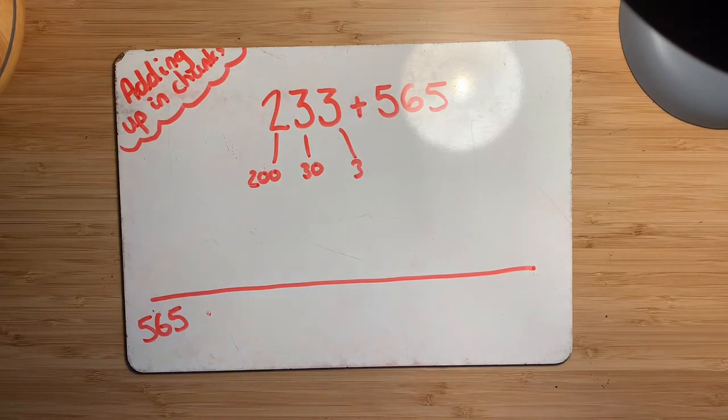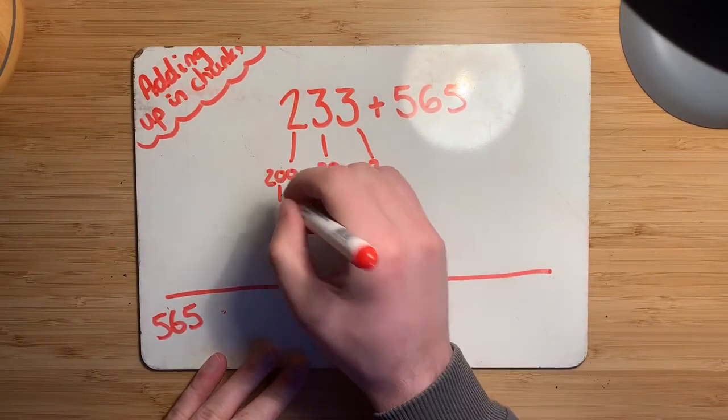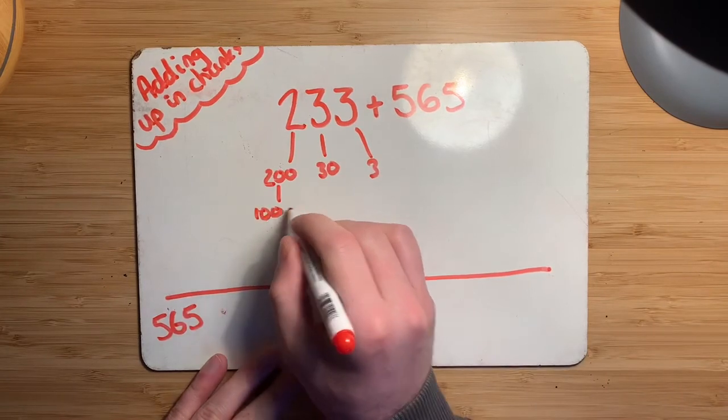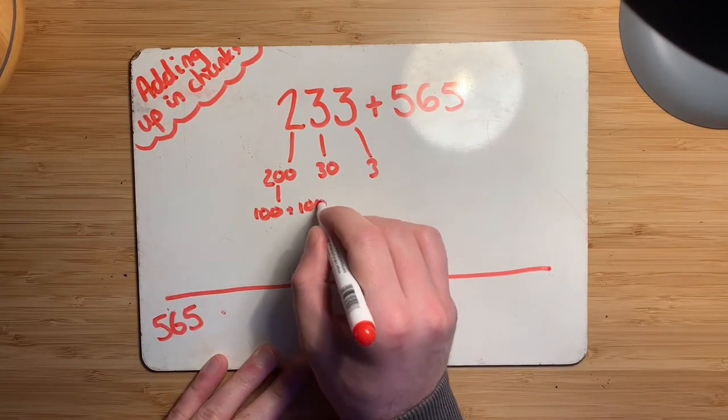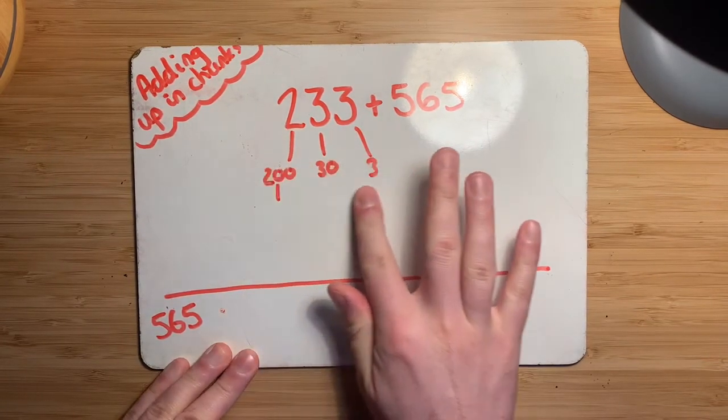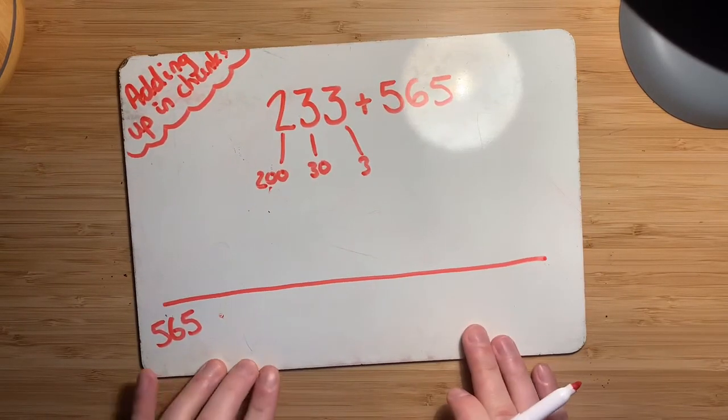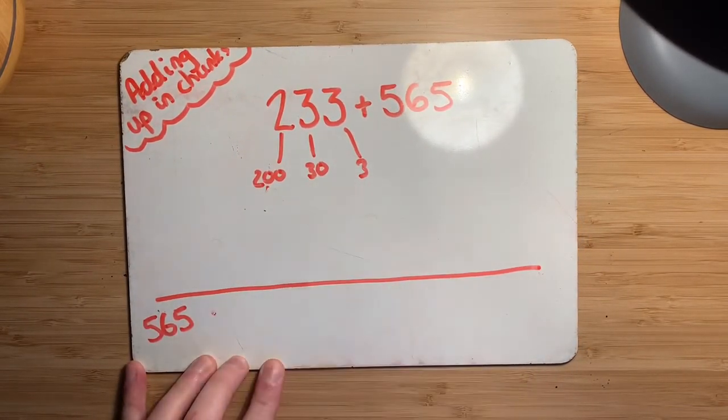And actually this case, I feel like these are fine chunks to do, but you might also want to break it down further if you like. So you might want to make that a 100 plus a 100. You might want to make the 30, 3 tens, it's up to you. It'll be completely up to you as long as the chunks are still making up the full number. So I'm going to keep it as it was because I actually think that place value makes this nice and easy.